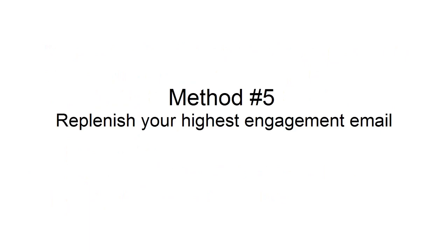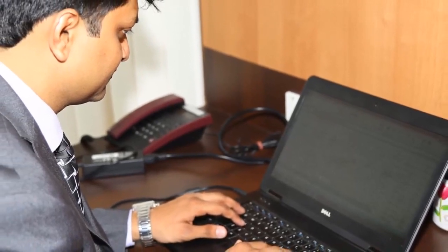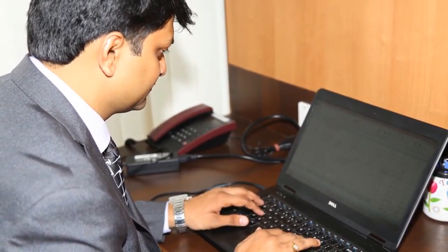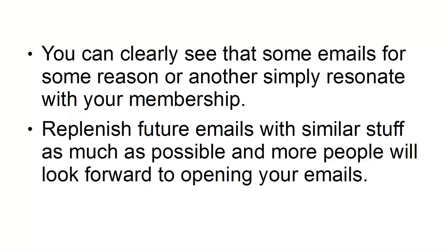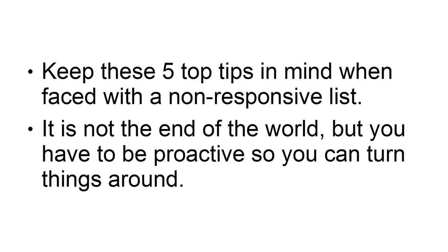Method 5: Replenish your highest engagement email. By looking at the track record of your list and paying attention to overall open rates as well as click-through rates, a certain pattern should emerge. You can clearly see that some emails simply resonate with your membership. Replenish future emails with similar content as much as possible and more people will look forward to opening your emails. Keep these five tips in mind when faced with a non-responsive list — you have to be proactive to turn things around.